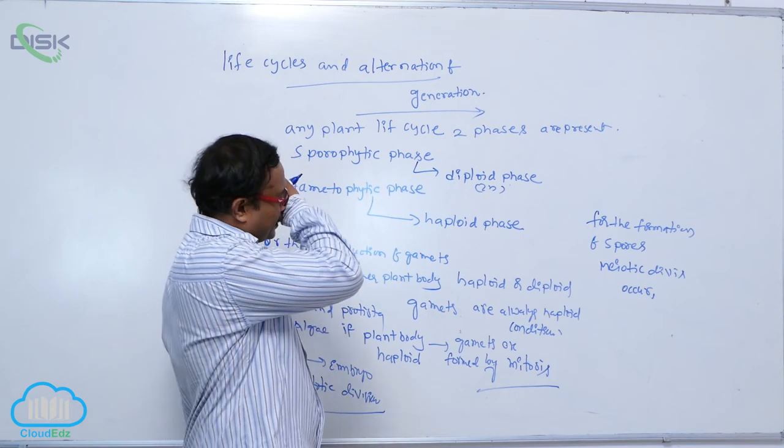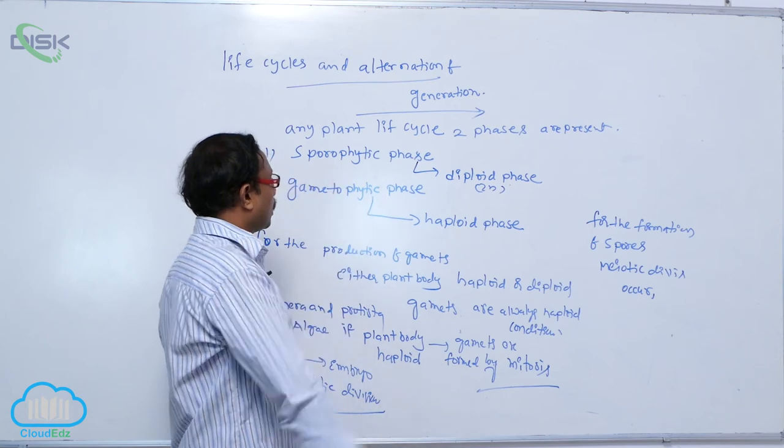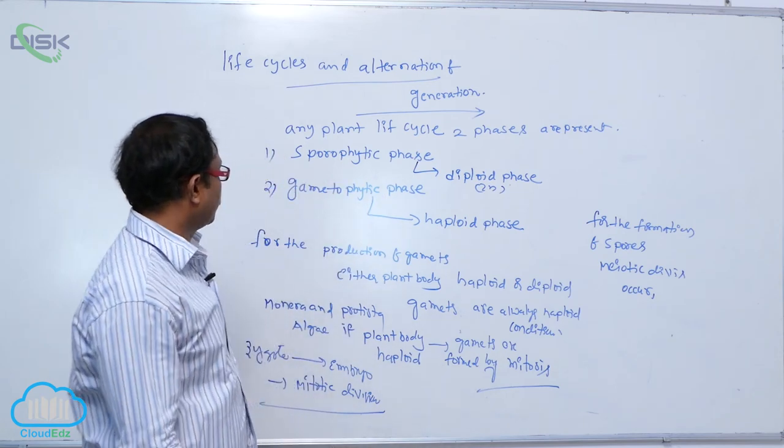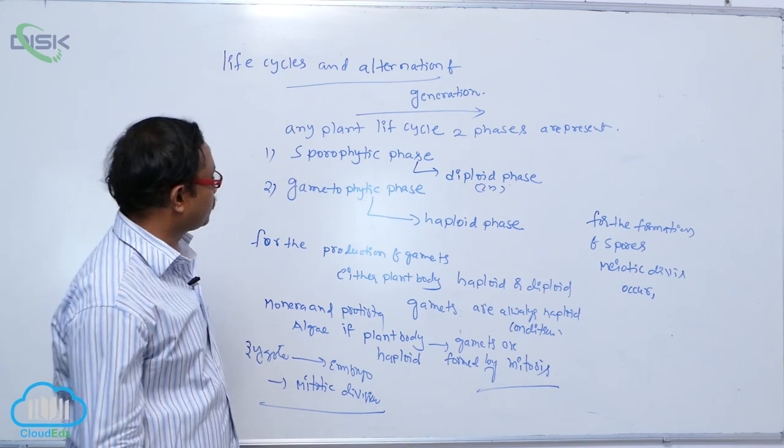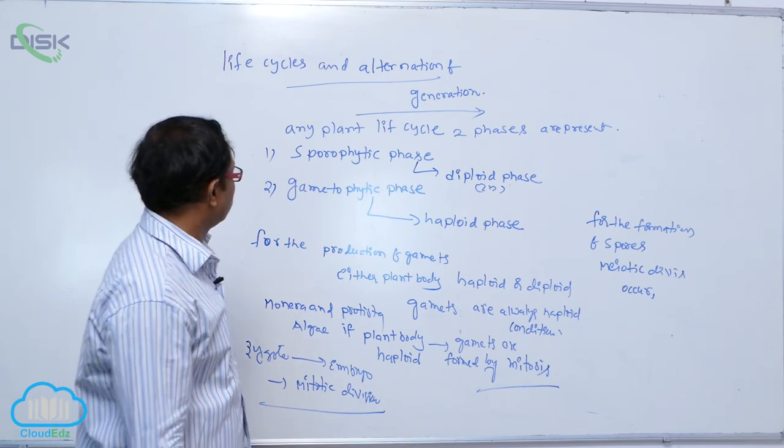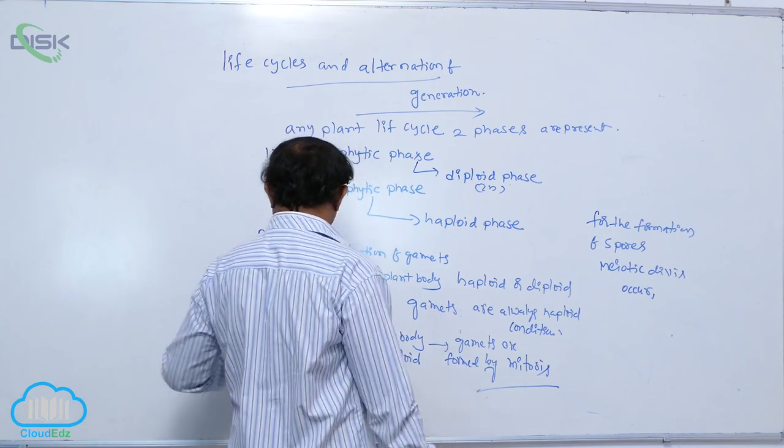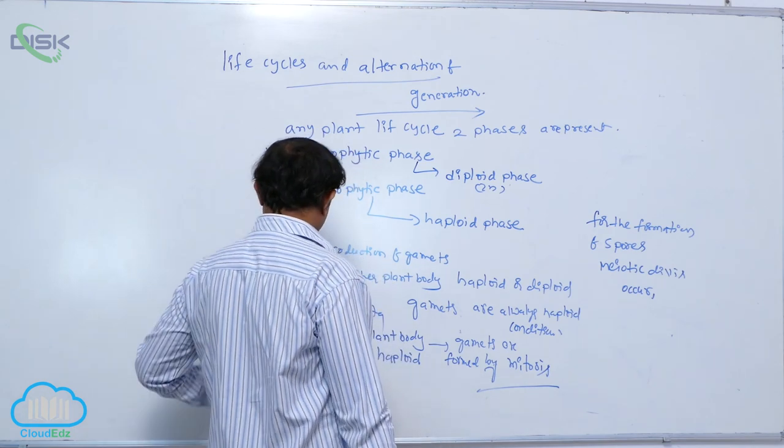It means, any plant life cycle, two generations are present. One is the sporophytic phase, second one is the gametophytic phase. Depending upon which one is dominant, based on that dominant character, different life cycles are present.